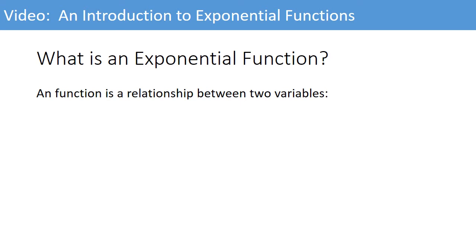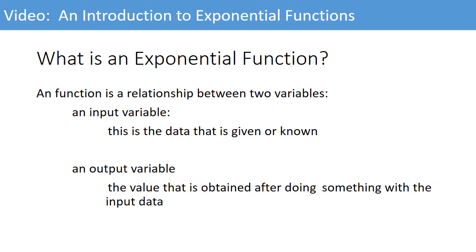A function is a relationship between two variables. Variables are letters that you use to represent real-life data. The input variable is normally the x-value. This is the data that is given or known, perhaps from research. Perhaps we want to know the output for a particular set of information. The output variable is the value that's obtained after doing something with the input data. Normally we represent the output variable y.